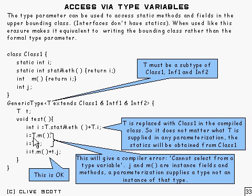If you try and do something like this, T.m or T.j, you'll get an error. The compiler error is 'Cannot select from type variable.' That's because j and m are instance fields and methods.